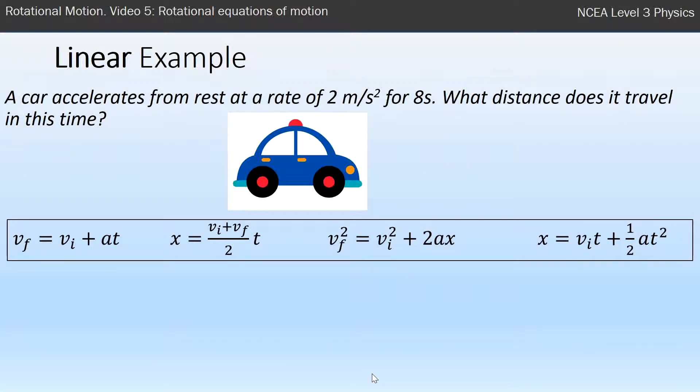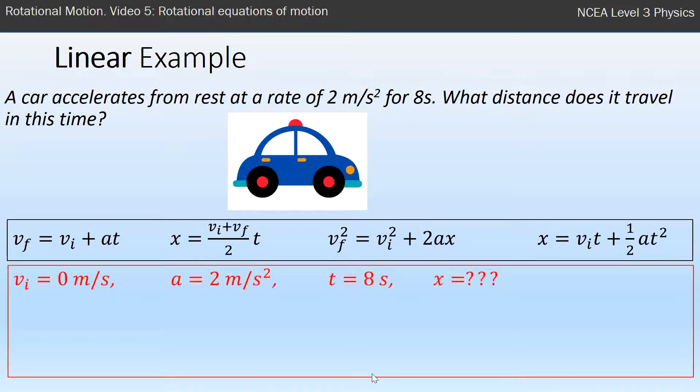As an example, I want to show you a linear example that would have been from level two last year, just to remind you of the process you went through. After you identified that you have a system undergoing acceleration and you realize you have to use one of these equations, then you write down what you know. In this case, we know the initial velocity was zero because it says it accelerates from rest at a rate of 2 meters per second squared. That's your acceleration for 8 seconds, and that's your time.